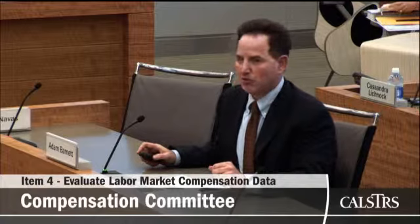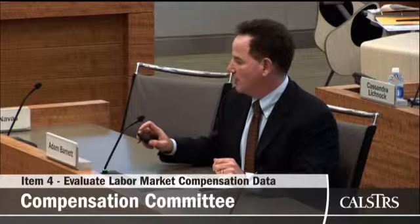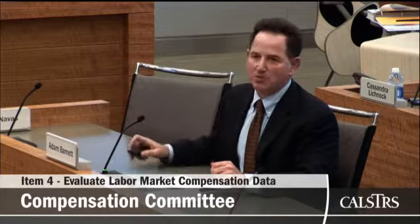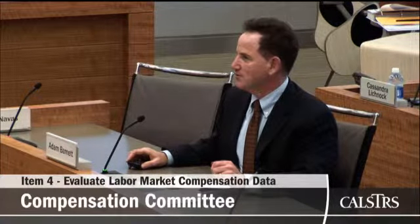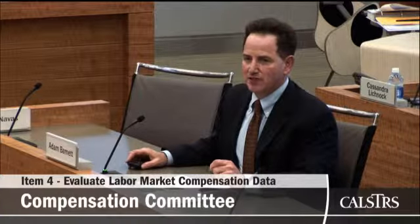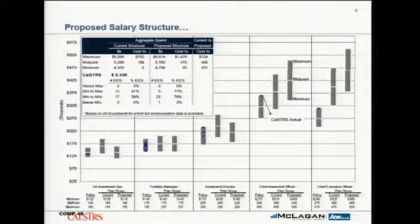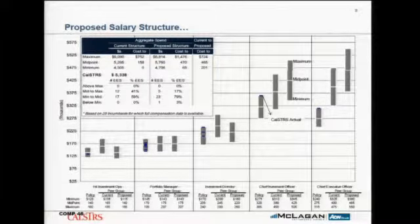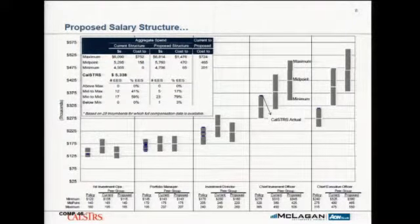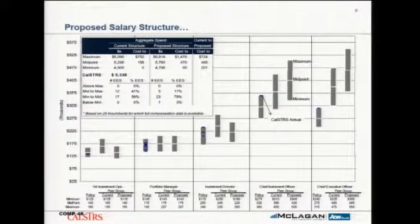If you look at the investment director column in the middle of the page — the policy shows CalSTRS current salary range: the minimum, the midpoint, and the maximum. The little blue hash marks are the actual salary levels of the people in those jobs. That's your current salary ranges and current actual pay.